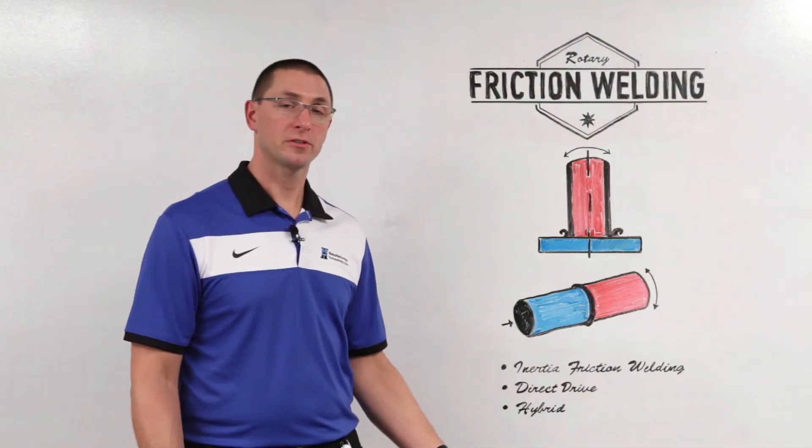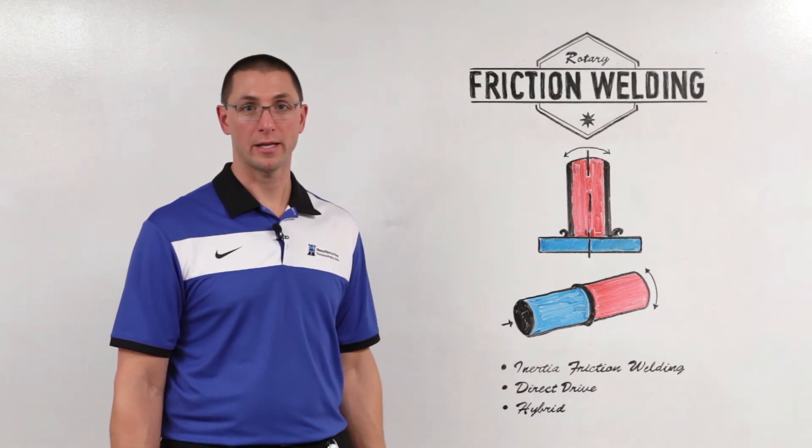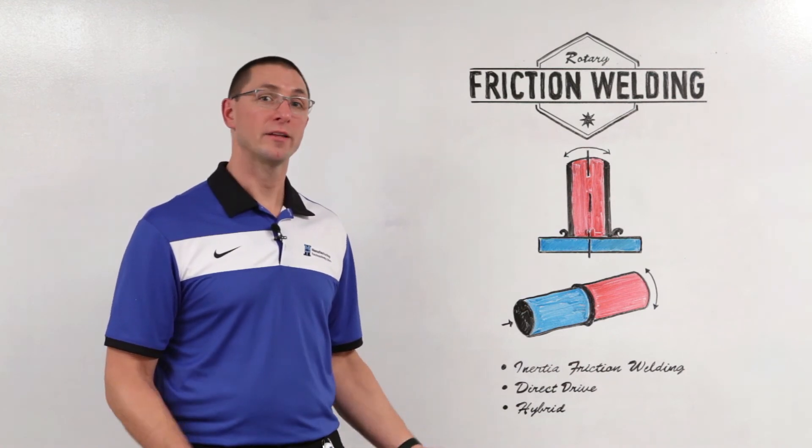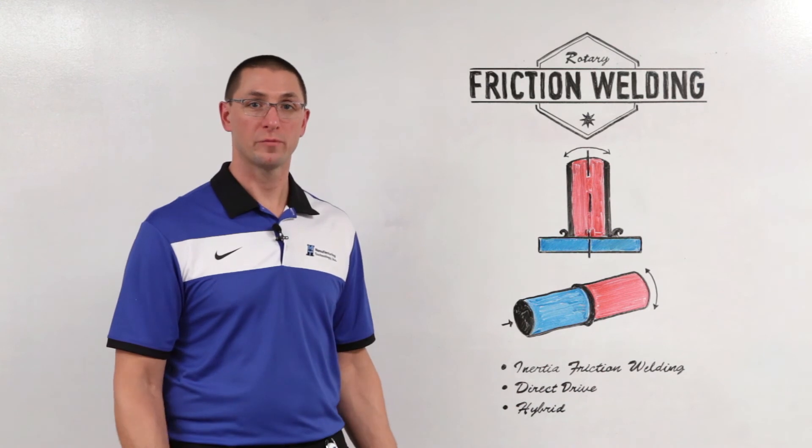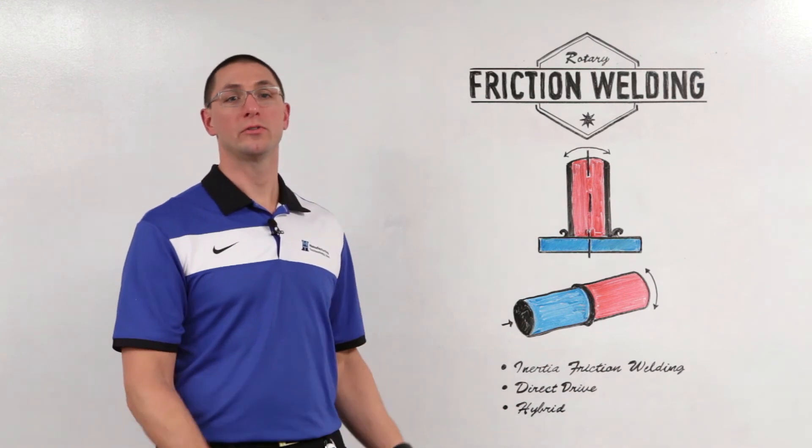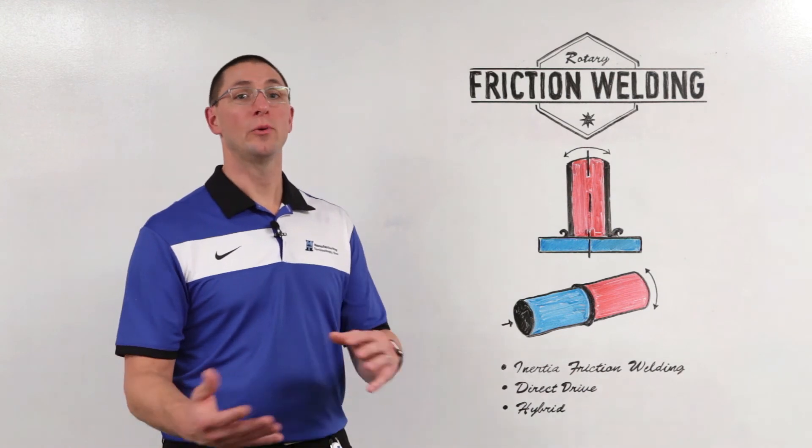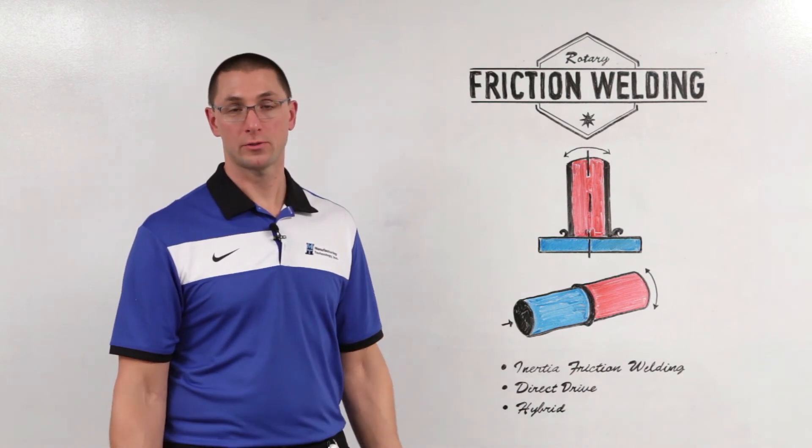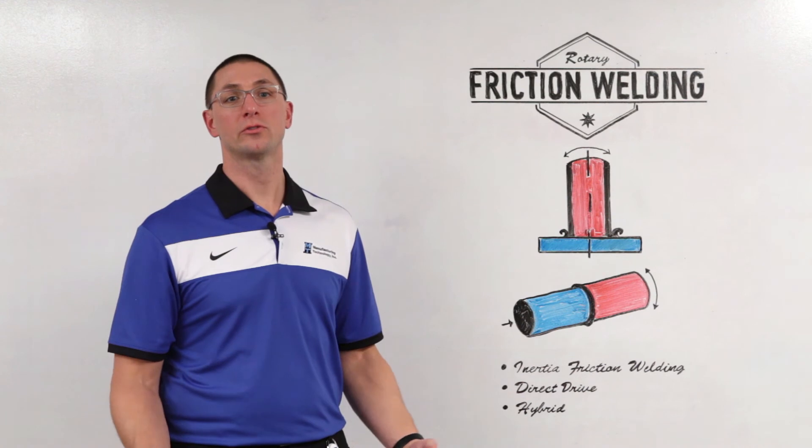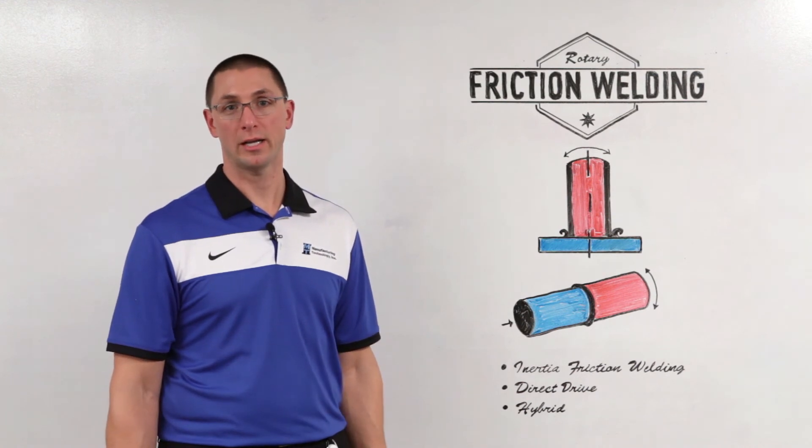The hybrid friction welding process uses the best of both inertia and direct drive. You have the constant energy side of the direct drive process where you're driving using the electric motor, adding energy to the beginning of the process, but then you end with the flywheels and a fixed storage energy amount. This helps you solve some of your more challenging joining applications.